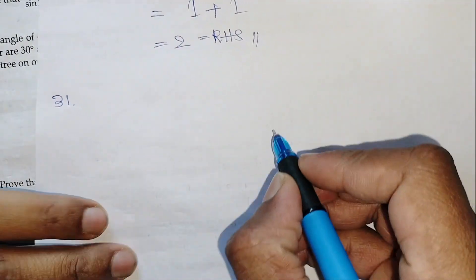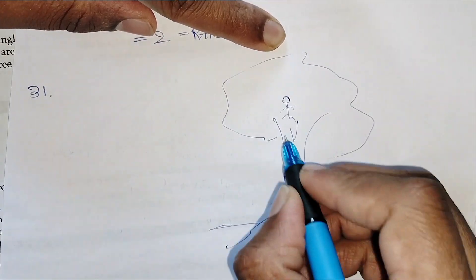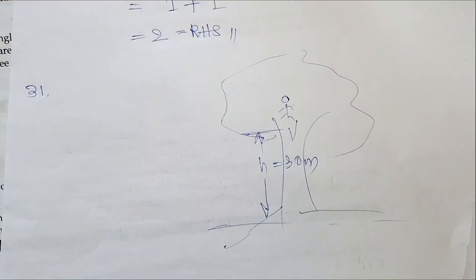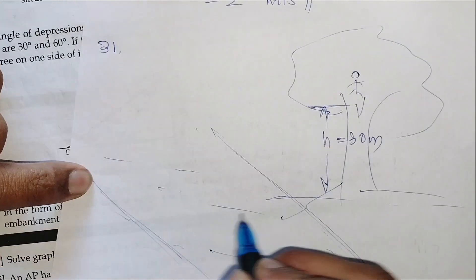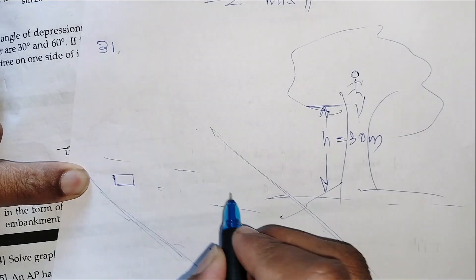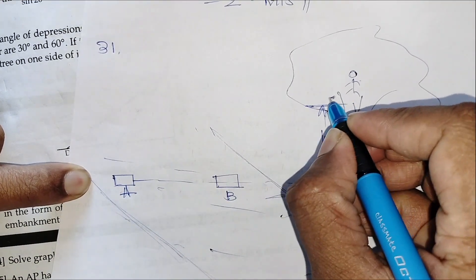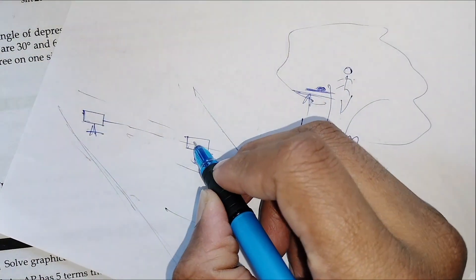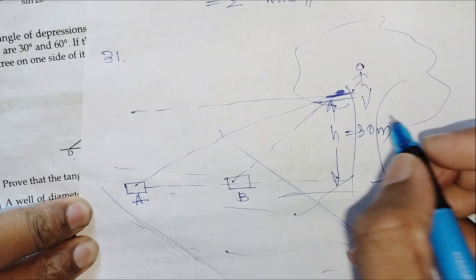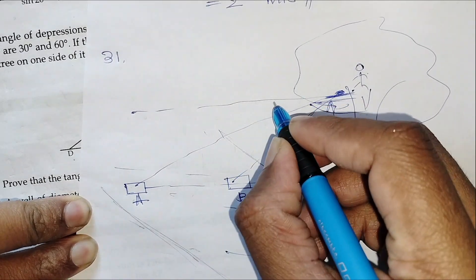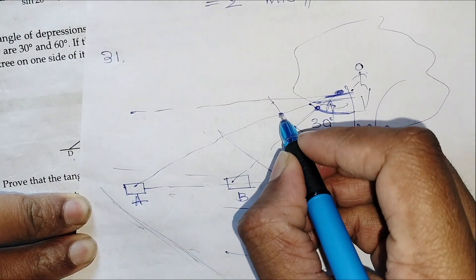I will directly take the diagram. There is a tree — a person is sitting at the top and the tree has a height of 30 meters on the bank of a river. There is boat number one and boat number two, let us call them A and B. They are in the same line, and when the person sees from this height, one boat is at an angle of depression of 60 degrees and the other at 30 degrees.